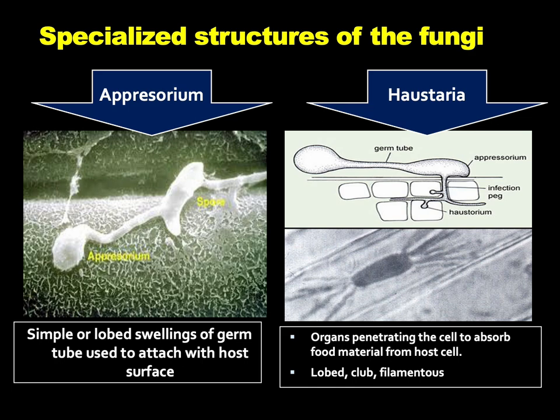Fungi have some specialized structures. Number one is the appressorium. This appressorium may be a simple or lobed swelling of the germ tube, and this type of structure is generally used by fungi to attach themselves to the host surface. Another specialized structure is called the haustorium, and this type of structure is produced by fungi to obtain nutrients from the host cell. They may be lobe type, club type, or filamentous.